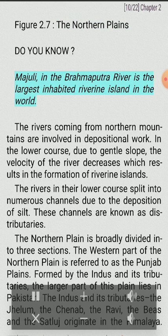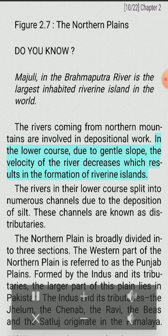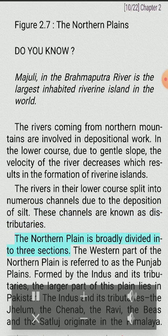Majuli, in the Brahmaputra River, is the largest inhabited riverine island in the world. The rivers coming from the northern mountains are involved in depositional work. In the lower course, due to gentle slope, the velocity of the river decreases, which results in the formation of riverine islands. The rivers in their lower course split into numerous channels due to the deposition of silt. These channels are known as distributaries.